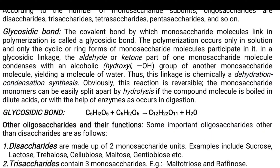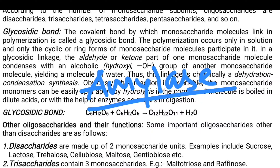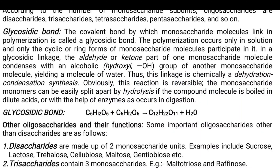Specifically, the enzyme responsible for breaking down complex carbohydrates is called amylase. It is amylase which is responsible for breaking the complex carbohydrates into simpler ones — in other words, the enzyme responsible for the breakdown of polysaccharides into disaccharides or monosaccharides. The reaction for sugar formation is: C6H12O6 + C6H12O6 → C12H22O11 + H2O.